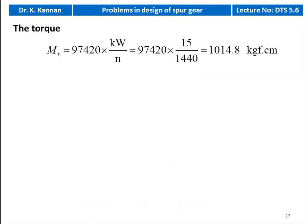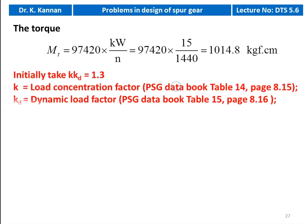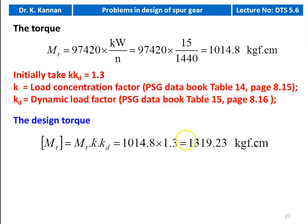The torque to be transmitted: MT = 97,420 × power in kilowatts / pinion speed = 97,420 × 15 / 1440 = 1014.8 kgf·cm. We take KKD = 1.3, so the design torque MT [design] = MT × KKD = 1014.8 × 1.3 = 1319.23 kgf·cm.